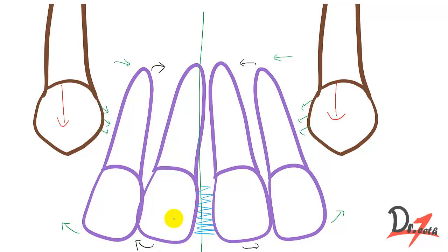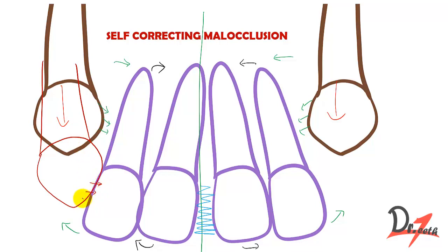This is also called a self-correcting malocclusion because what will eventually happen is this canine will erupt from this position to this position. I'm showing on just one canine. Now what it is doing is applying pressure on the crowns, so the action is reversed. The crown will now go mesially and the root will go distally.